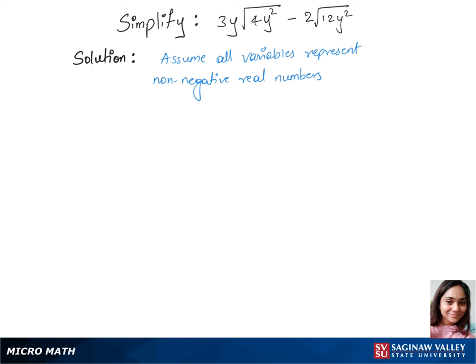Let's simplify this question. First, assume all variables represent non-negative real numbers. Let's write our first step: 3y times square root of, we'll write 4 as 2 squared times y squared, minus 2 times square root of, we'll split 12 into 4 times 3, times y squared.